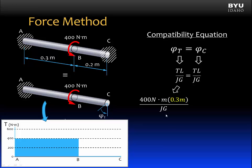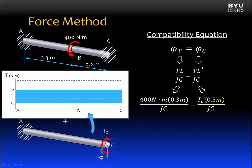The second term in our equation, phi sub C, corresponds to this image here at the bottom. If we were to draw the internal torque diagram, it would look something like this.